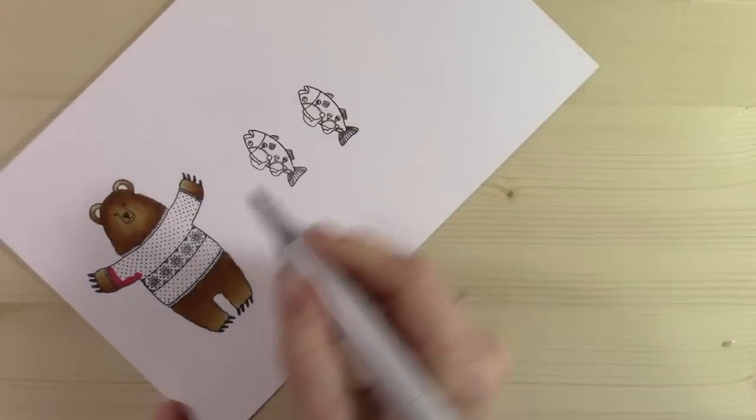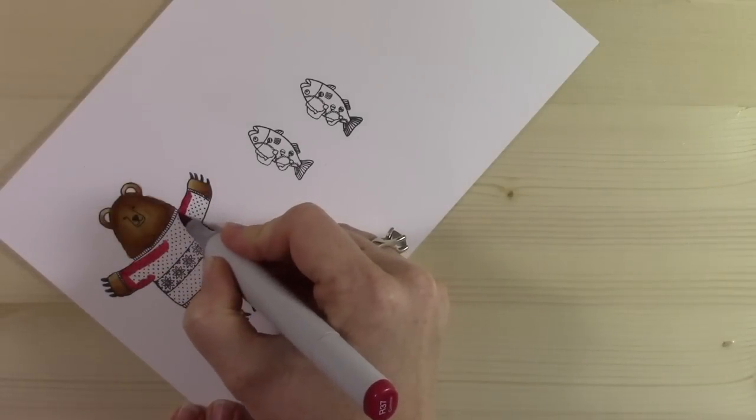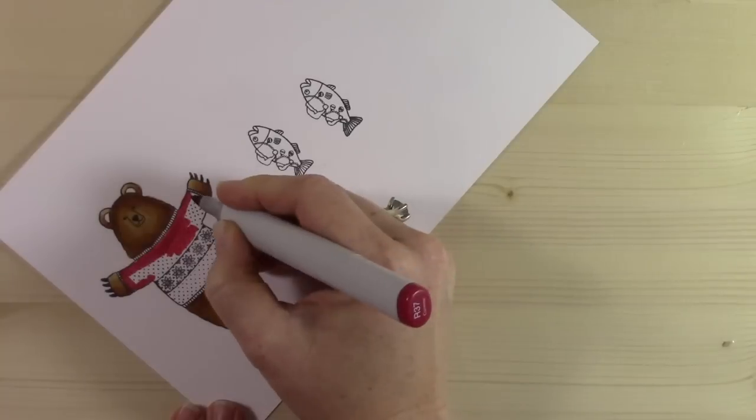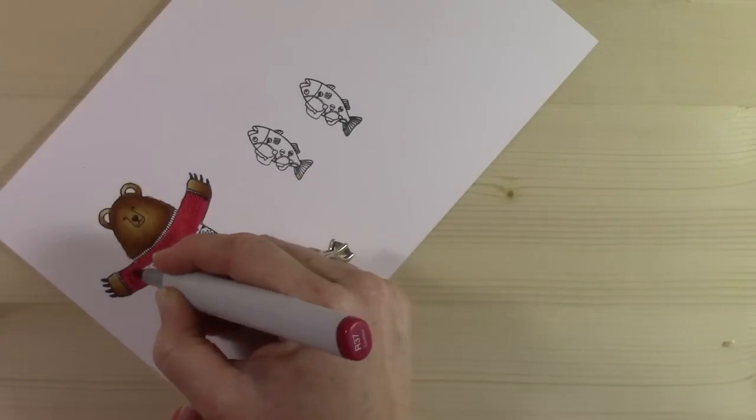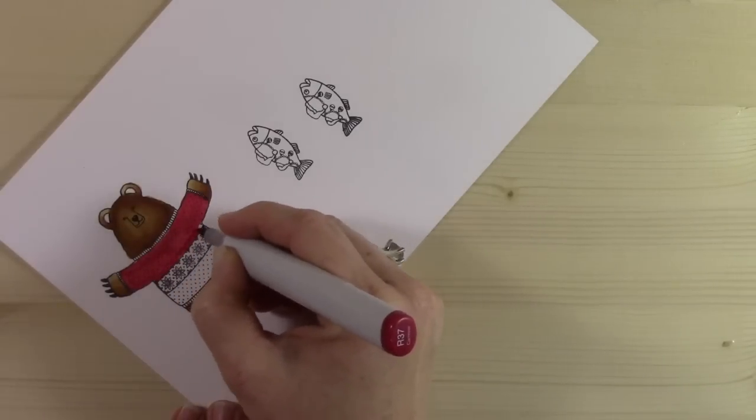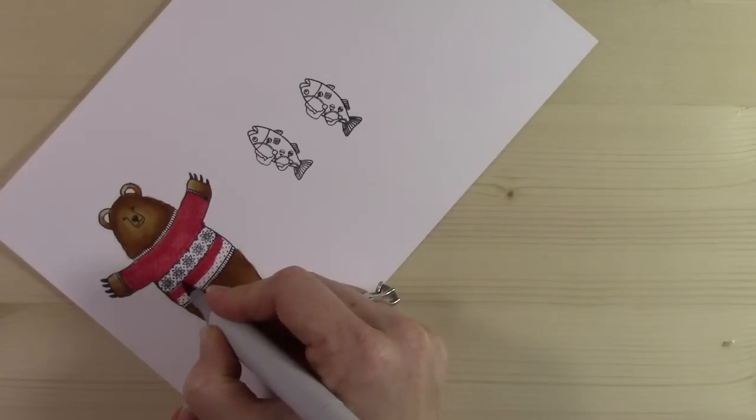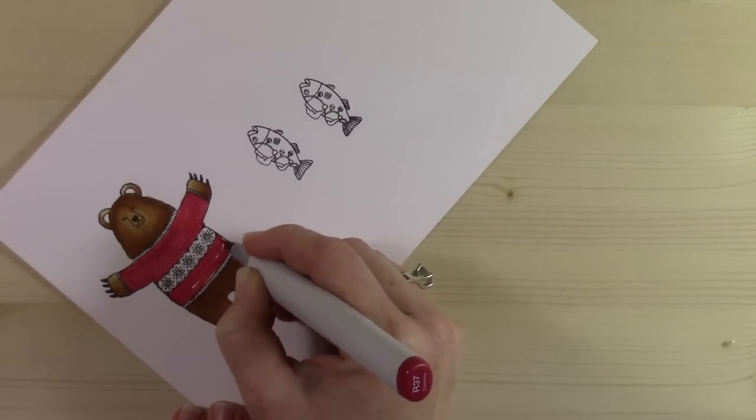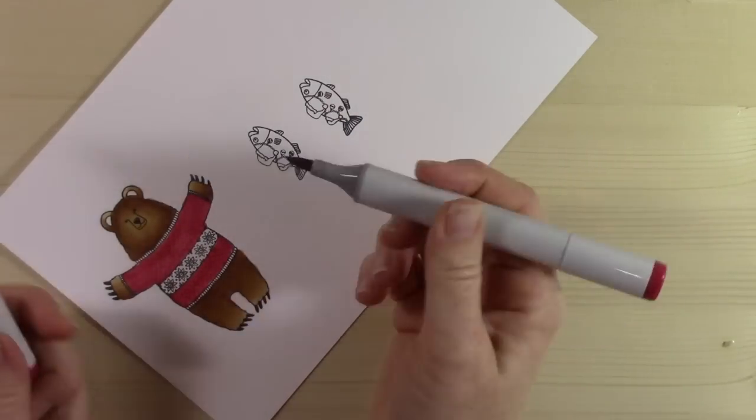I'm using R37 for this sweater, which is really a beautiful red. It's kind of like a cranberry red, got a little bit of a purplish feel to it. I just love it. I think it's one of the prettiest red colors. I'm just going to color his sweater and I'm keeping it very simple. Everything I'm doing I'm keeping really simple.